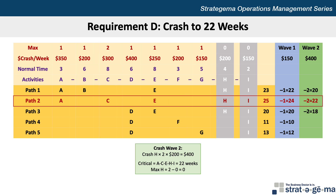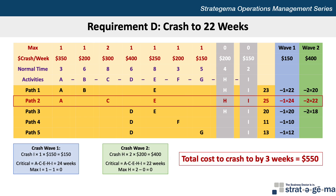The critical path remains A-C-E-H-I, which is now 22 weeks, and we've completed our objective of getting the project down to 22 weeks at a total cost of $550 in two waves by crashing I by one week and H by two weeks.